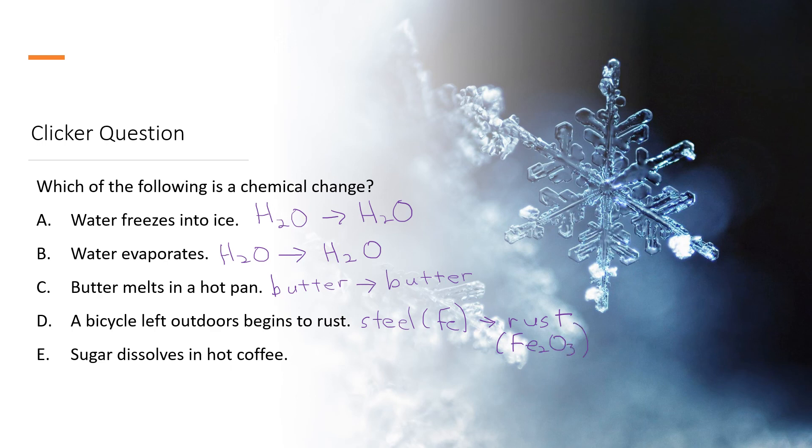When we have sugar dissolving in hot coffee, we're starting with sugar and unsweetened coffee. And when we mix those two things together, now we're ending up with sweetened coffee, which is sugar mixed with coffee. You can still taste that both of those things are present. The process we're doing there is just mixing. So the only thing here that is a chemical change is answer D.